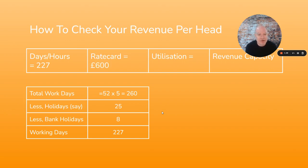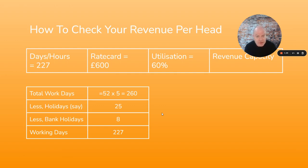If we take a rate card of, for example, £600 per day, and then a target utilization — and this obviously has a big impact on your revenue per head — I've put 60%, which is three days out of five. I don't think that's unrealistic or too stretching. You can go a little bit higher, and for certain individuals it should be higher; for others it should be lower because they'll have wider responsibilities within the agency.